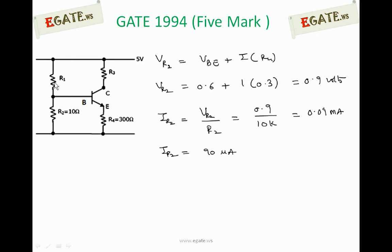Now we need to calculate what is the current flowing through this R1. Current flowing through this R1 is nothing but sum of base current and sum of current flowing through this R2. First we will calculate R2, then we will add these two things.